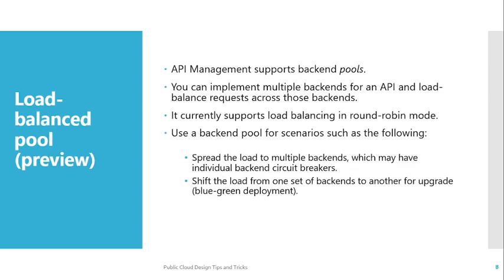Coming back to our topic — load balancing. Currently in API Management, you have the capability of backend pools. Inside API Management backend pools, you can add multiple backends and implement load balancing of requests across those backends based on your load capabilities. You can route traffic between backends. It currently supports load balancing only in round robin mode. It also uses a backend pool for scenarios where you want to spread the load to multiple backends, each of which may have individual backend circuit breakers. It also helps you shift the load from one set of backends to another, following blue-green deployment.